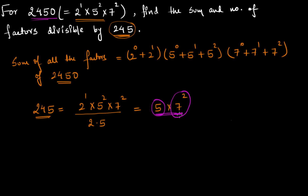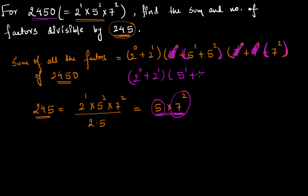The factors of 2450 should contain at least one 5 and two 7s in order to be a multiple of 245. Looking at our expression, to ensure all terms contain at least one 5, we remove 5^0 from the bracket, leaving just (5^1 + 5^2). We also need at least two 7s, so we remove 7^0 and 7^1, leaving just 7^2. The final expression becomes (2^0 + 2^1) × (5^1 + 5^2) × 7^2.